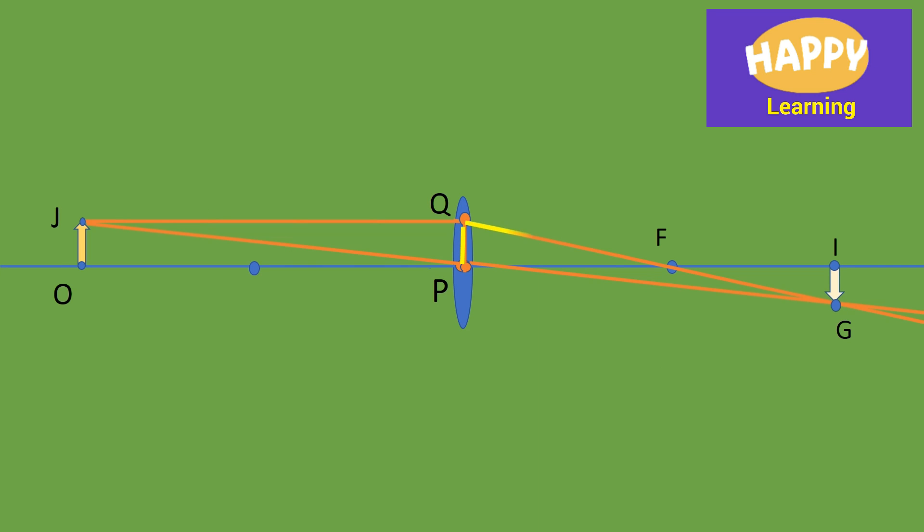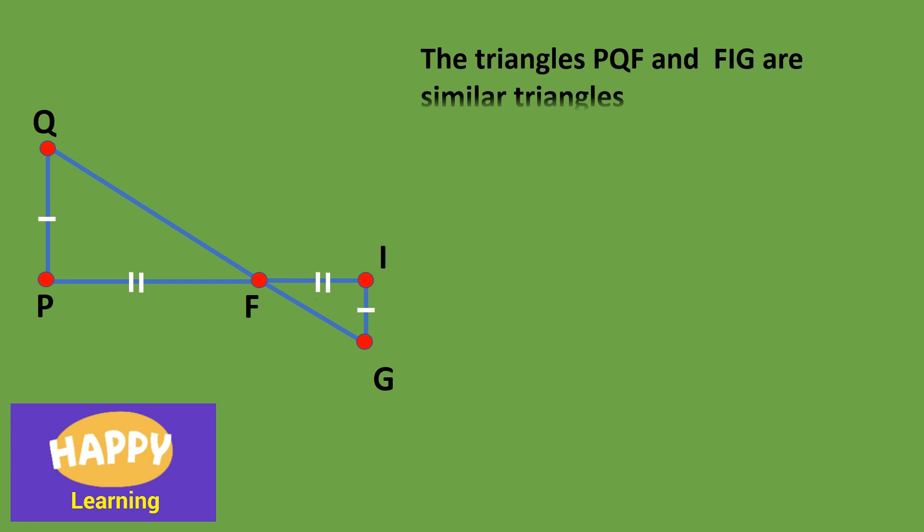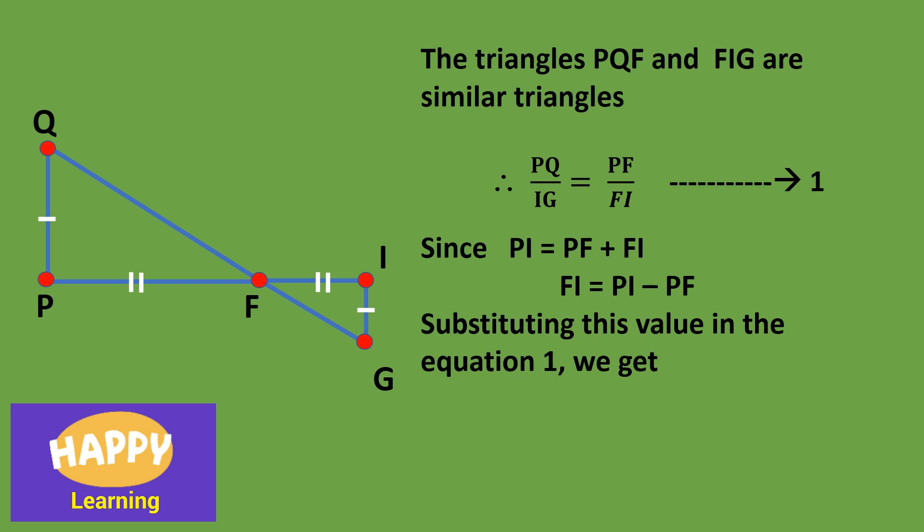So, this is the diagram. Triangle PQF and triangle FIG are similar triangles. So, from the principle of similar triangles, we can write PQ by IG is equal to PF by FI. Since PI is equal to PF plus FI, from the diagram, we can write FI is equal to PI minus PF. Then, substituting this value in the above equation, we get PQ by IG is equal to PF by PI minus PF. So, let it be equation number 2.